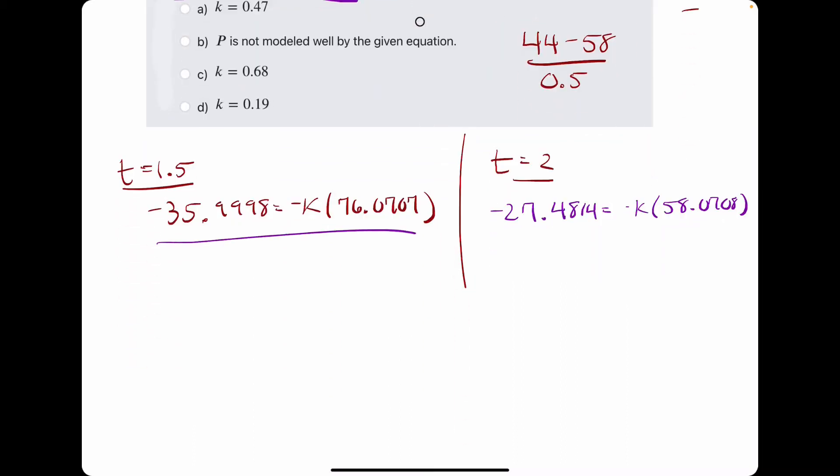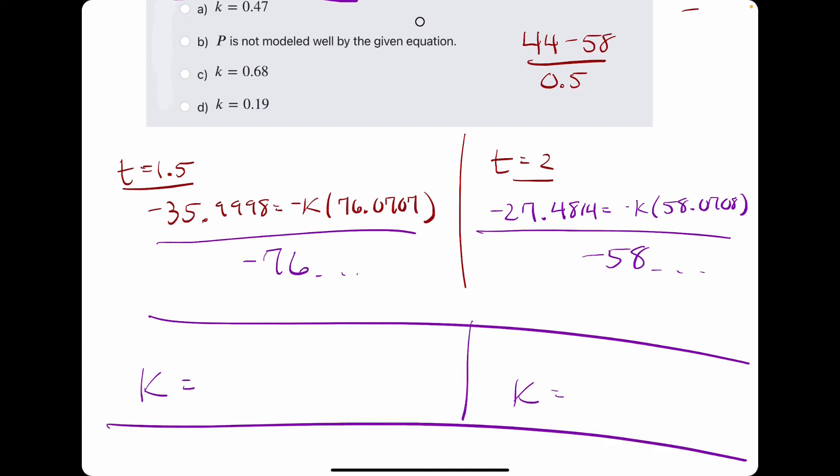And for each, again, we will divide by the negative 58 value, and then on this side, on the left side, we'll do the negative 76 value. Go ahead and calculate each of them.